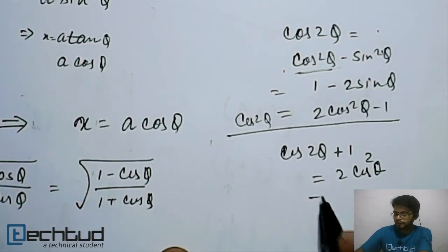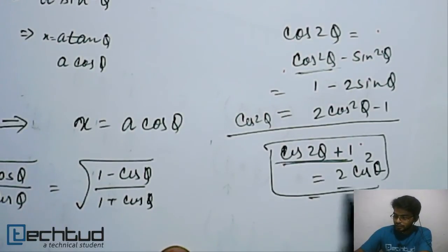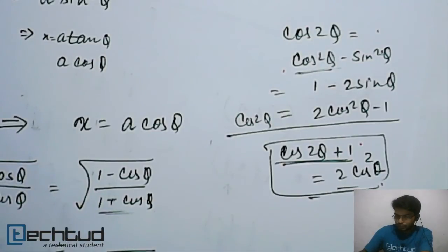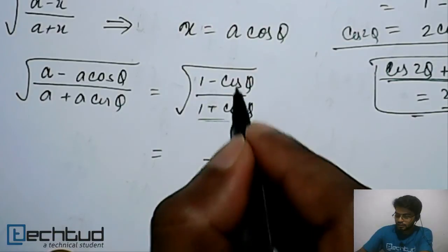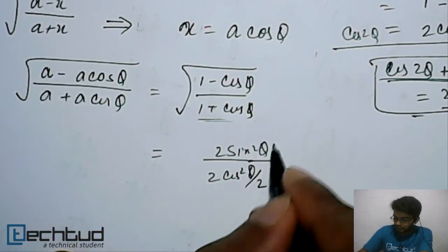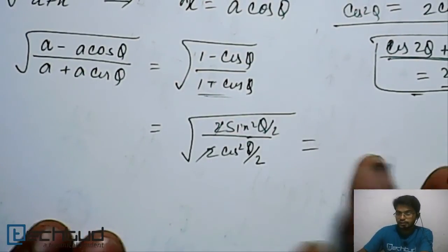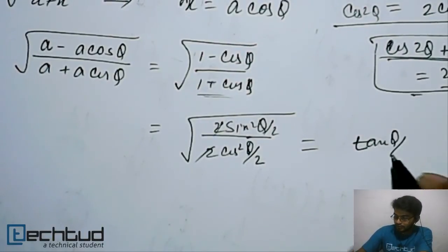Using these half-angle identities, the denominator becomes 2cos²(θ/2) and the numerator becomes 2sin²(θ/2). Taking the square root, the 2s cancel and the expression simplifies to tan(θ/2). So the expression is reduced.